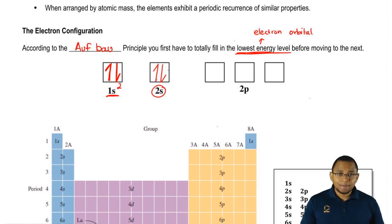They're both s, but they're different because one is in the first shell, one is in the second shell. Being in the second shell gives the 2s more energy.